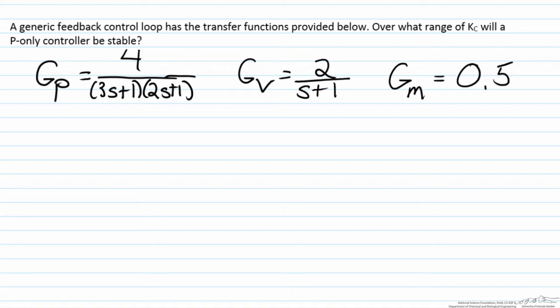In this screencast we will use the Routh array to determine the ranges of stability for a controlled system. We have a problem where we have a generic feedback loop with transfer functions for the process, the valve, and the sensor transmitter provided below.